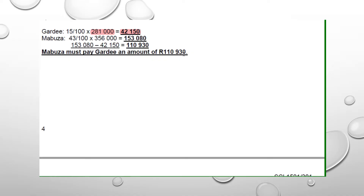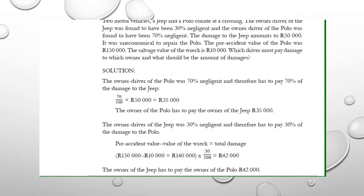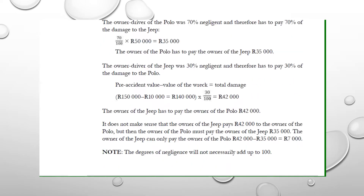So Mabuza must pay Gadi an amount of R110,930. For you to fully understand what I am actually saying, you need to go through the study guide first. That is the first page you need to start from, then you can go to the memo that I provided and you are going to understand how I reached that amount. Everything is just here, plain and clear.